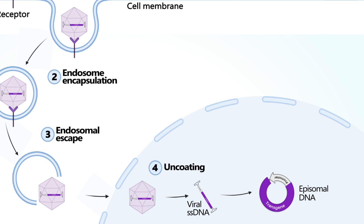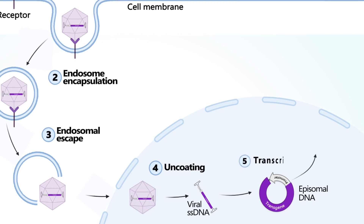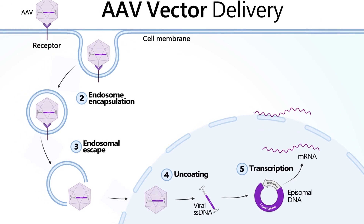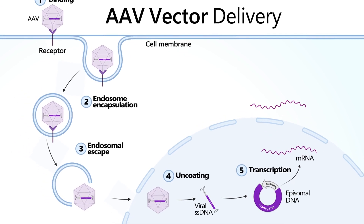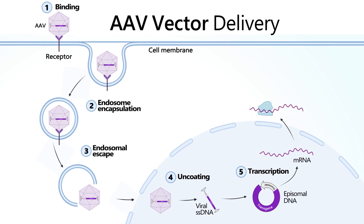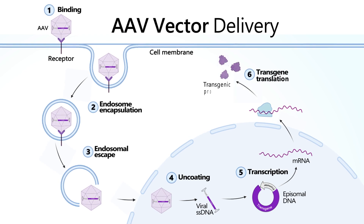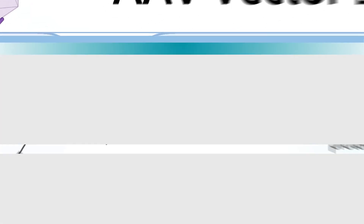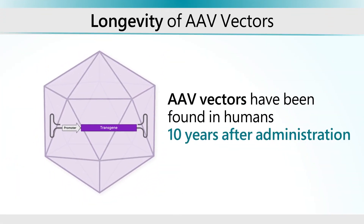The promoter sequence next to the transgene initiates transcription into mRNA. The resulting mRNA is translocated into the cytoplasm, where it is translated into a functional protein. Once produced, the protein is recruited to different cell components to function. AAV vectors have been found in humans 10 years after administration, demonstrating long-lasting activity in patients.